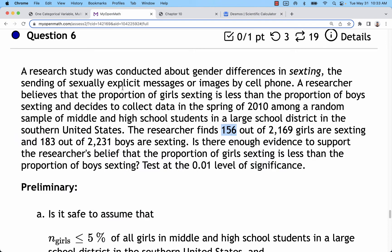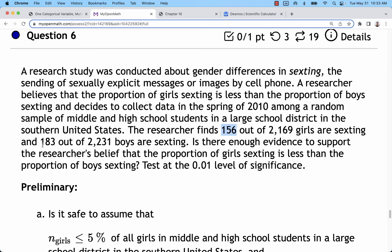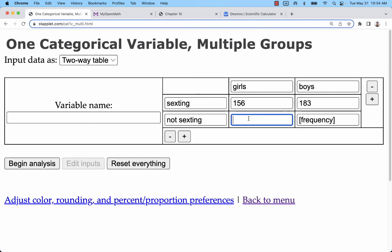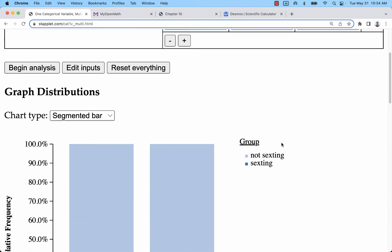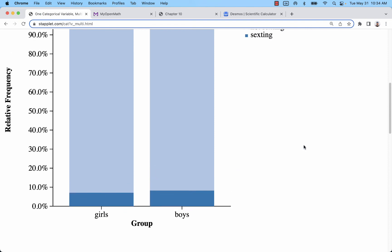We need the frequencies to add up to the total. I'm going to take my total for each minus my success rate. So 2,169 minus 156, and in this other group I have 183 out of 2,231, so 2,231 minus 183. So 2,013 and 2,048 are my other numbers. I can look and compare those percentages. These are different percentages for those groups.